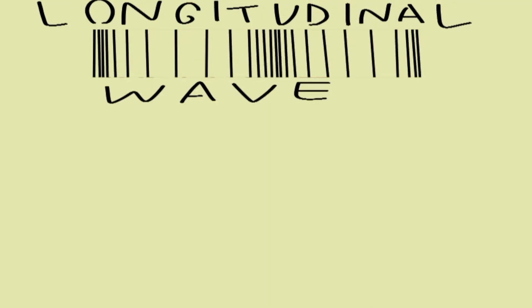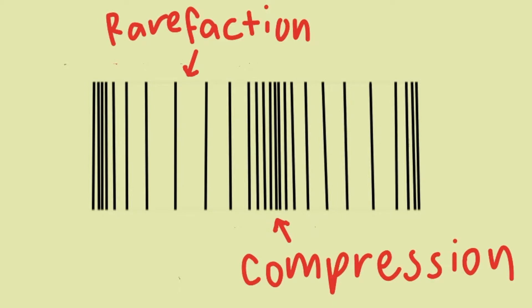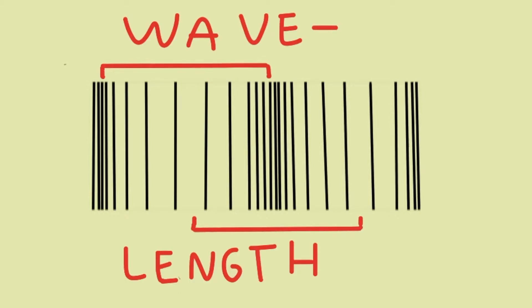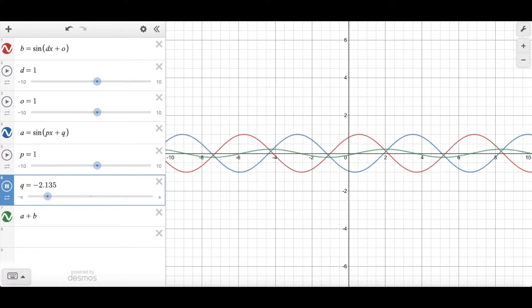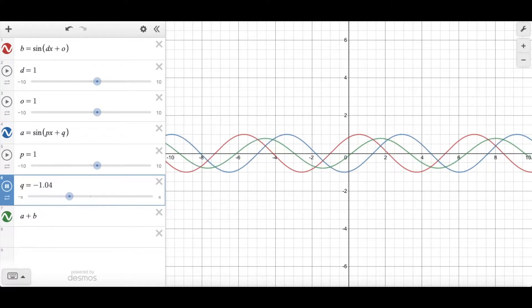Here's a longitudinal wave. The parts where it squeezes together are called the compressions and the parts where it's further apart are called rarefactions. The distance from rarefaction to rarefaction or compression to compression is the longitudinal wave's wavelength. Sound waves are longitudinal.